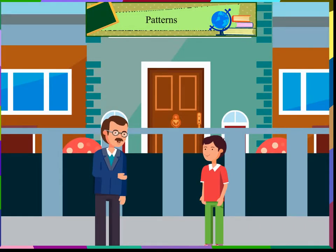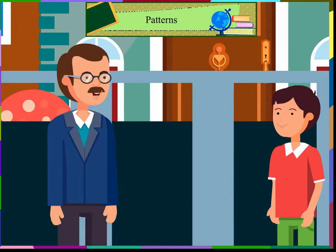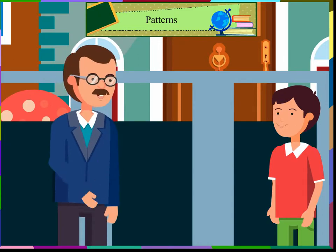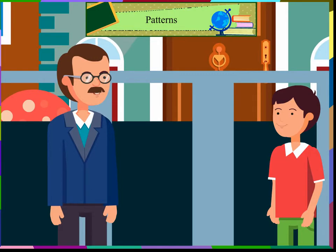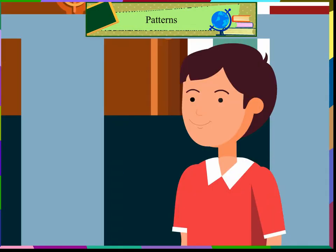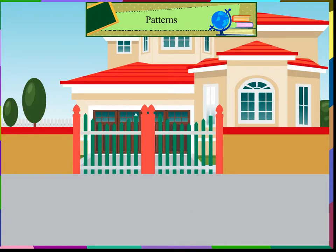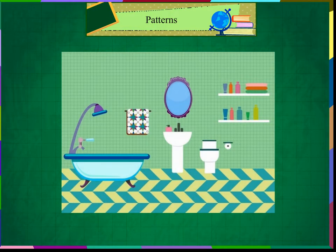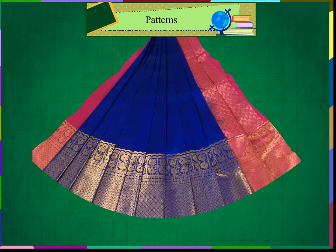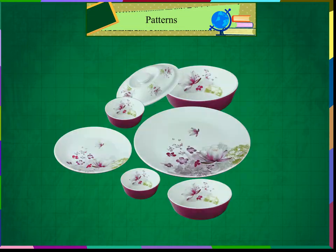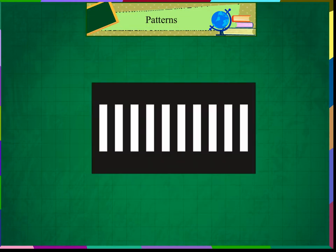We can see patterns all around us. A pattern is a design that repeats. Father asked, 'Can you give some examples of patterns in our surroundings?' Varun said, 'Yes father — the boundary wall of our house, the bathroom tiles, my mother's saree border, my sister's dupatta design, the pink crockery in our house, and the zebra crossing.'